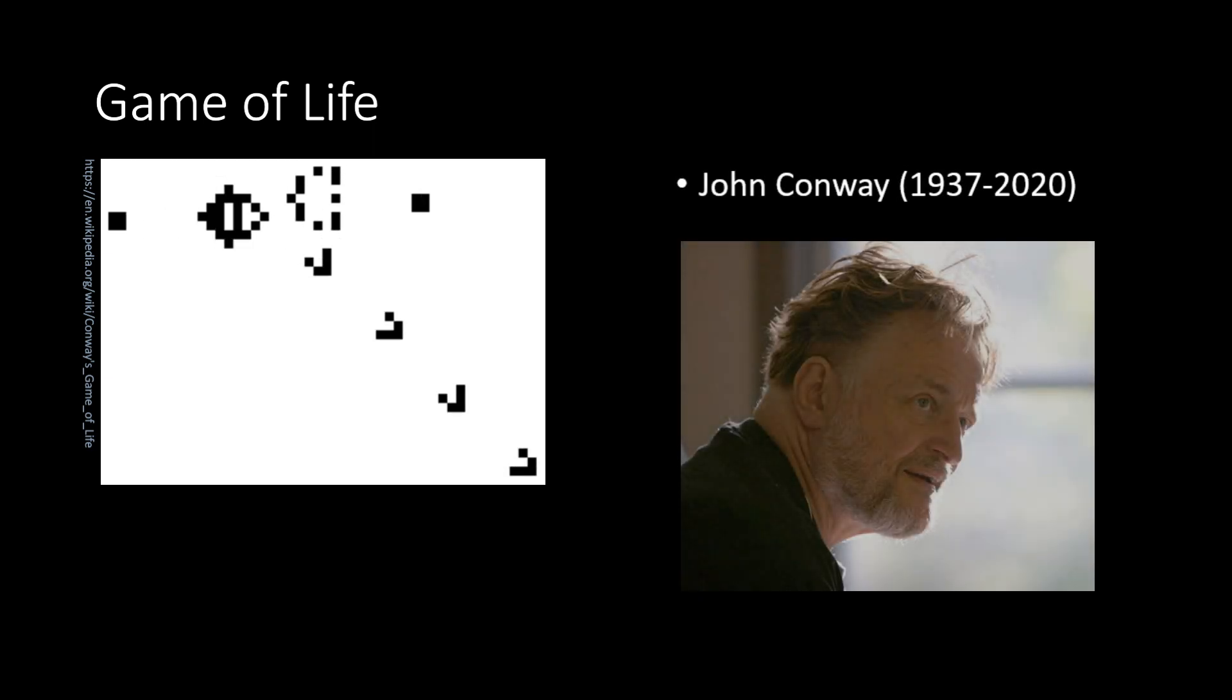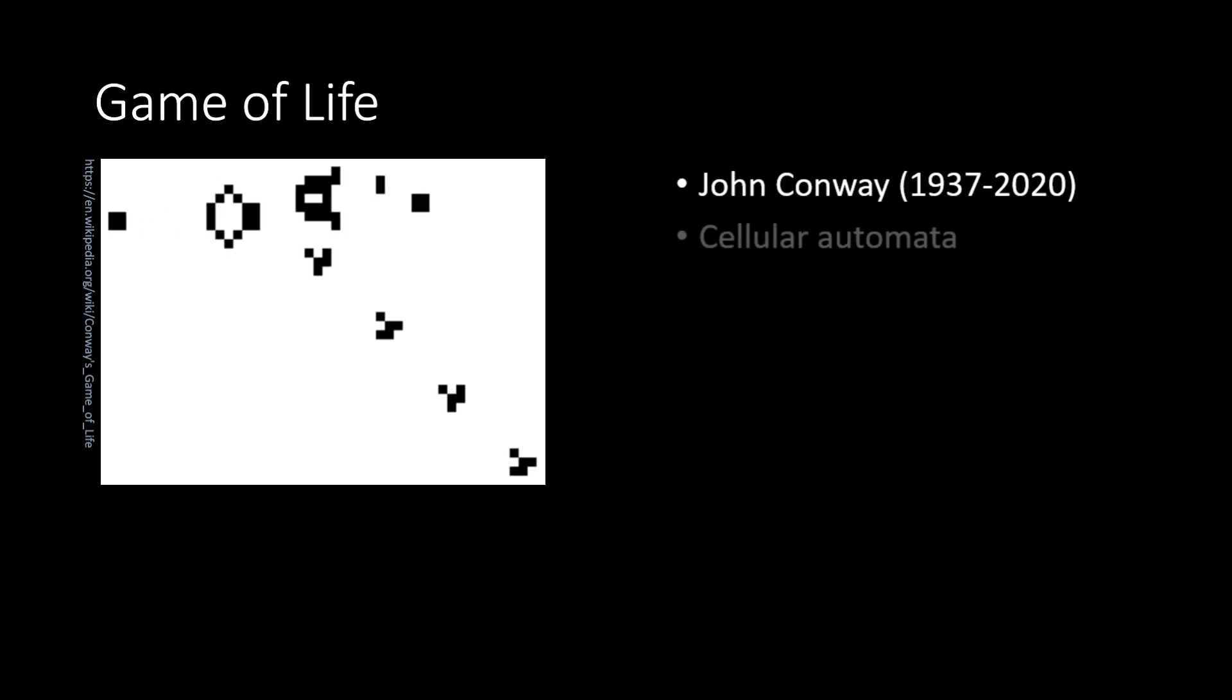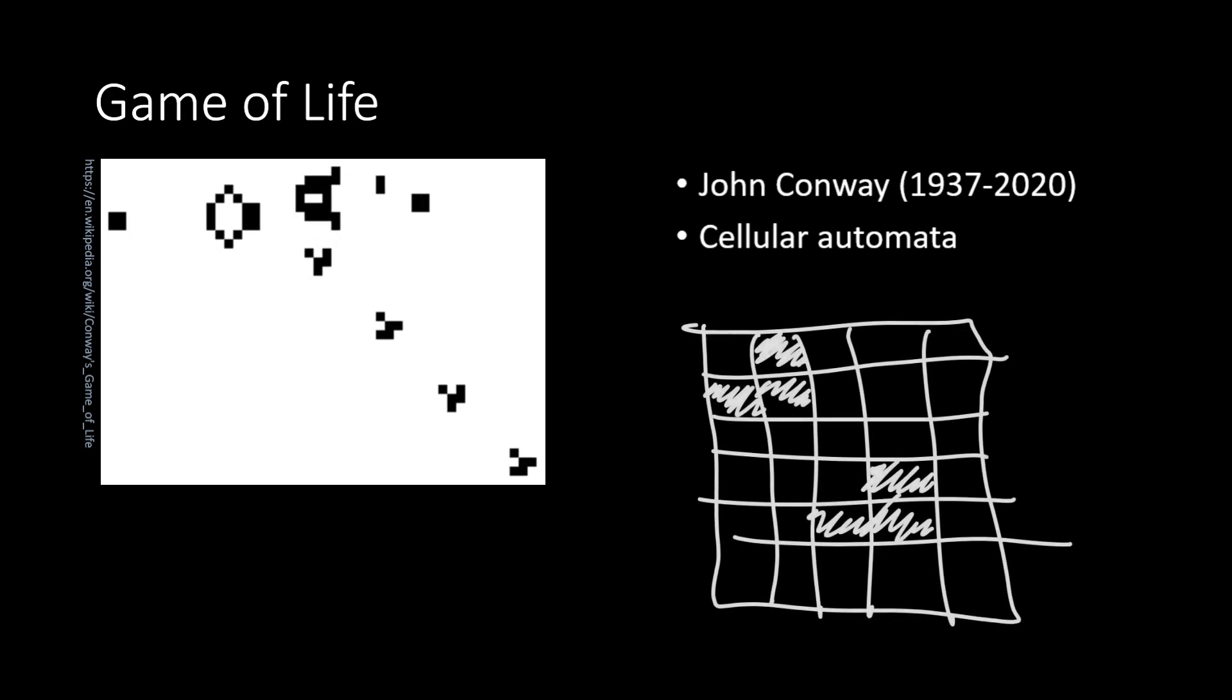Game of Life was created by John Conway, British mathematician working at the University of Cambridge and the University of Princeton. The model is an example of cellular automata. In other words, it is discrete, works on a grid and evolves as a global one-step algorithm.